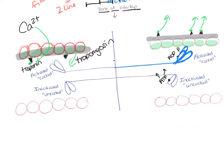When the ATP splits, it splits into two molecules — ADP and phosphate — and both of them stay attached to the activated myosin head. The next thing that happens is that the activated head will automatically attach itself to that active site on the actin. Now these heads are bound to the active site on the actin molecule, and they still have ADP and phosphate attached to them.